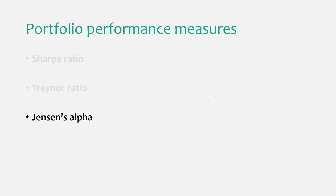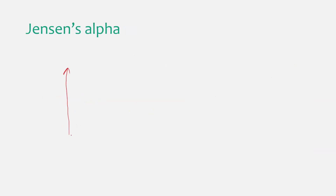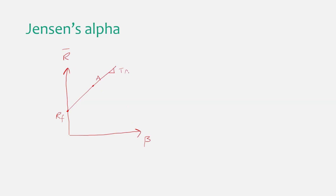Our final measure in this tutorial will be Jensen's Alpha. This is slightly different from the Sharpe Ratio and Treynor Ratio. To explain it, I'll draw the same graph again — realized return on the vertical axis and beta as the measure of risk. We have our stock A here and the risk-free rate here. The Treynor Ratio was essentially the slope of the line connecting these two points — and like the Sharpe Ratio, we want that slope to be as high as possible.